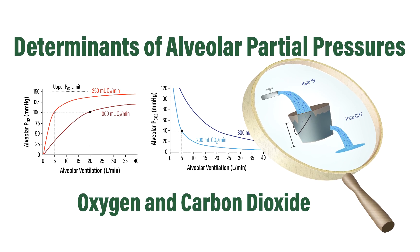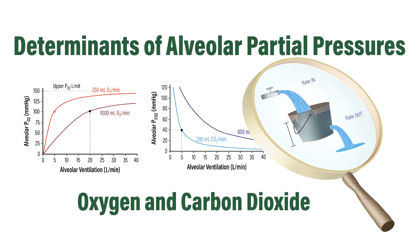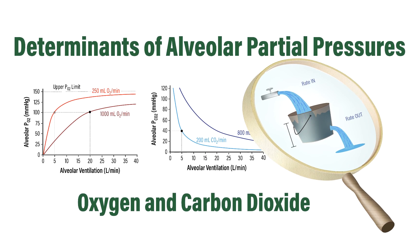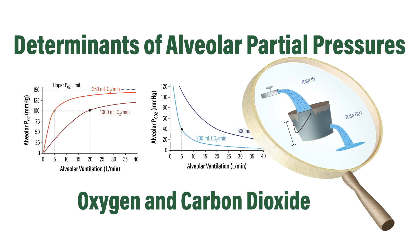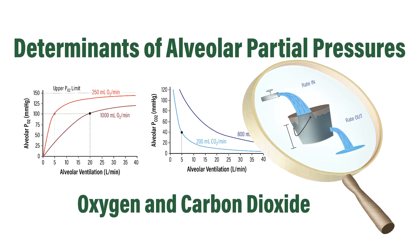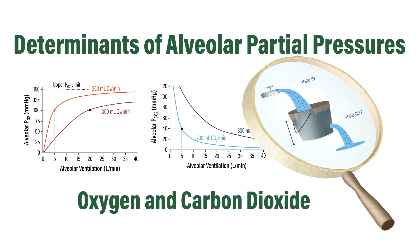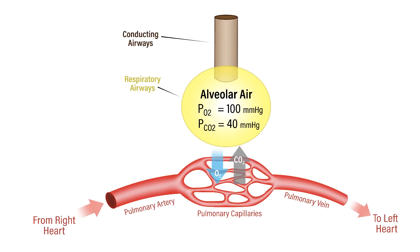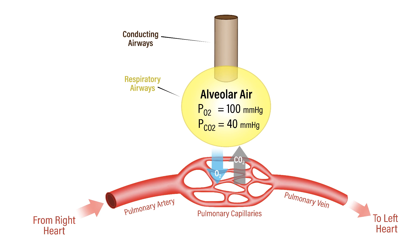The alveolar partial pressure of oxygen and carbon dioxide is important because this ultimately determines the systemic arterial pressure of those blood gases. So what determines alveolar PO2 and PCO2? First, let's talk about alveolar PO2.